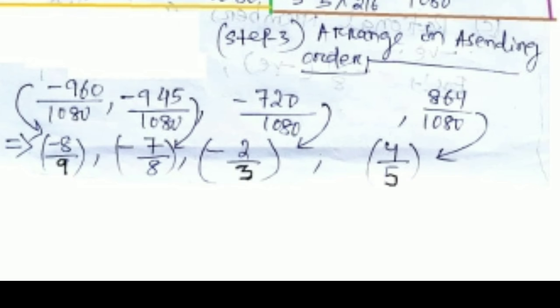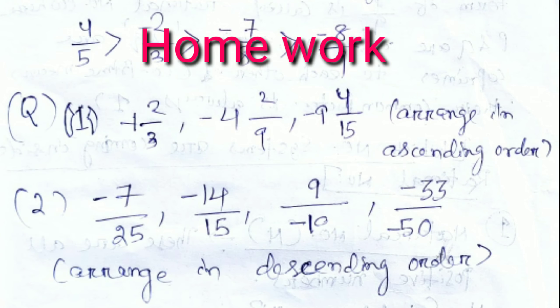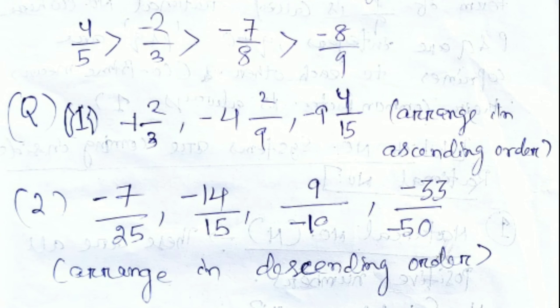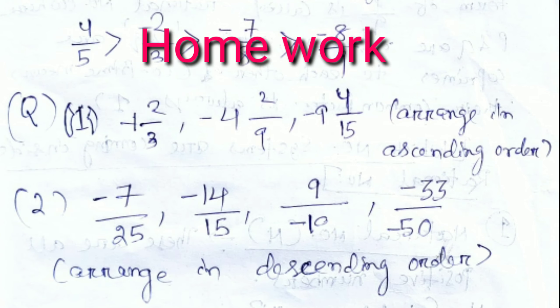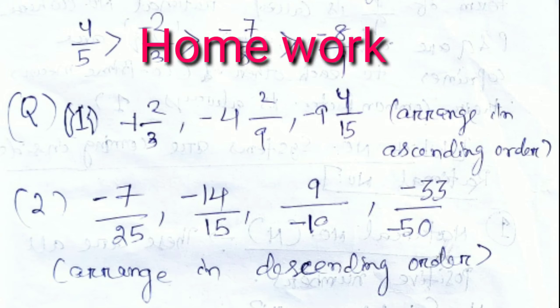Writing the actual values: minus 960 by 1080 is the equivalent form of minus 8 by 9, minus 945 by 1080 is minus 7 by 8, minus 720 by 1080 is minus 2 by 3, and 864 by 1080 is 4 by 5. So the ascending order is: minus 8 by 9, minus 7 by 8, minus 2 by 3, and 4 by 5. For descending order, reverse it: 4 by 5, minus 2 by 3, minus 7 by 8, minus 8 by 9. Homework: (1) Arrange minus 12 by 3, minus 42 by 9, minus 94 by 15 in ascending order. (2) Arrange minus 7 by 25, minus 14 by 15, 9 by minus 10, minus 33 by minus 50 in descending order.